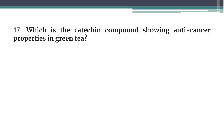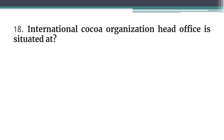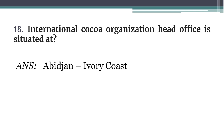Question 17: Which catechin compound shows anti-cancer properties in green tea? Question 18: Epigallocatechin gallate (EGCG) is the catechin compound showing anti-cancer properties in green tea. Also, the International Cocoa Organization head office is situated at Abidjan, Ivory Coast.